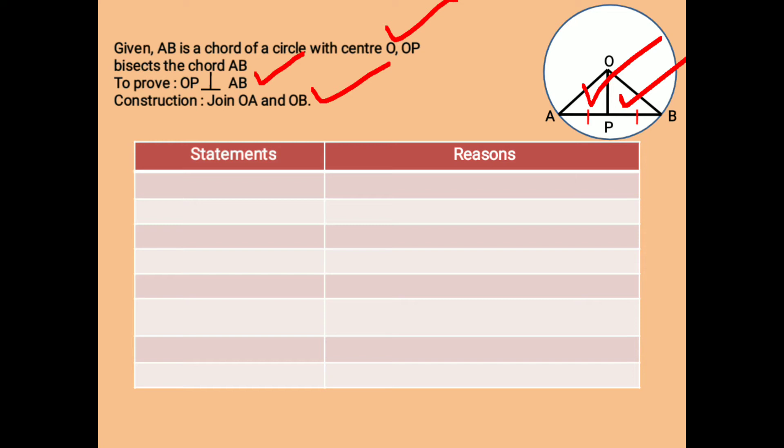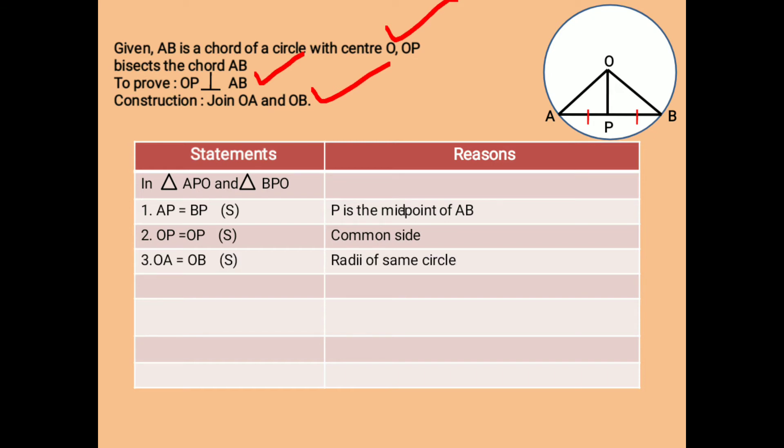To do this, here AP equals BP, P being the midpoint of AB. And thirdly, OA equals OB being radii of the same circle.